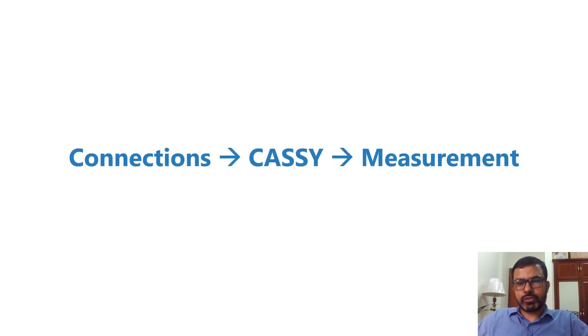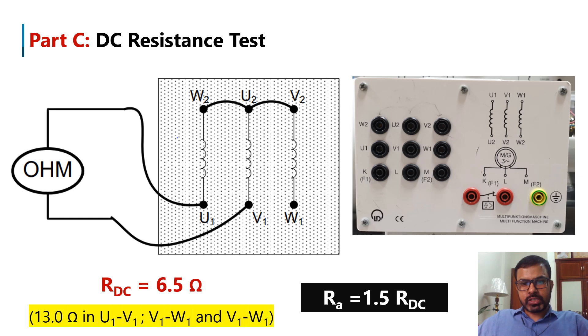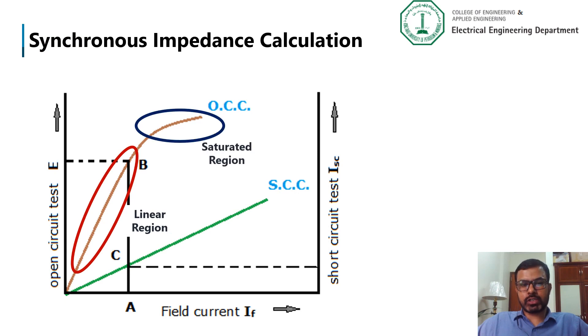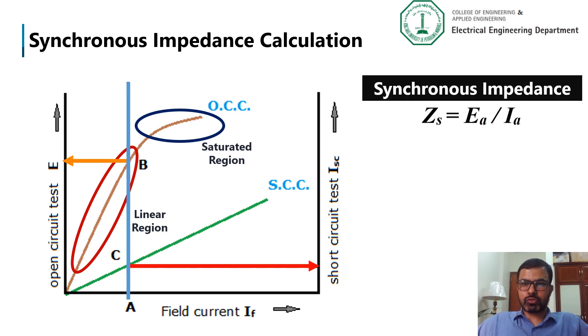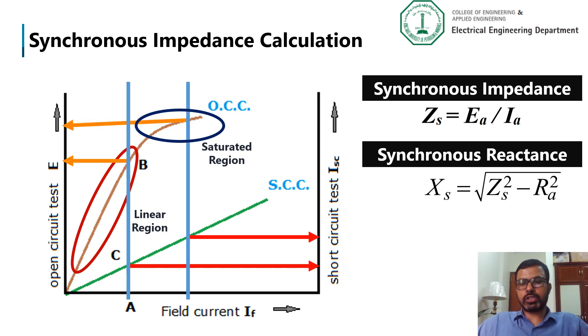After making the circuit connections, we will record the required measurements in the KC software. Part C of this experiment is the DC resistance test, from which we calculate the armature resistance of the synchronous generator. From the recorded measurements, you will obtain a graph with a linear region and a saturated region. Drawing a straight line through the linear region and plugging the corresponding voltage and current values into the equation gives the synchronous impedance. From the synchronous impedance and armature resistance, you can obtain the synchronous reactance. These parameters can similarly be determined in the saturated region.